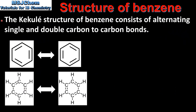We'll start by looking at the Kekulé structure of benzene, which consists of alternating single and double carbon to carbon bonds. Here we can see two representations of the Kekulé structure of benzene, which are known as resonance structures.